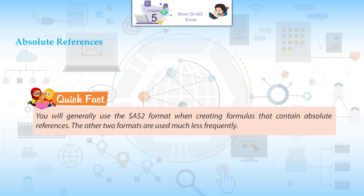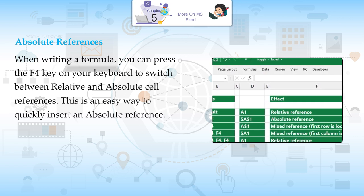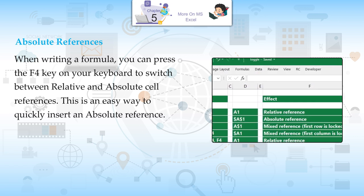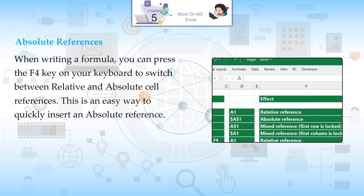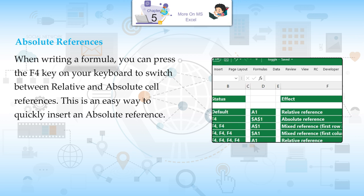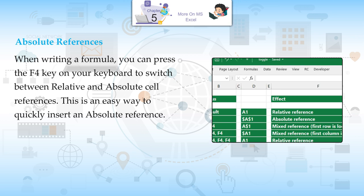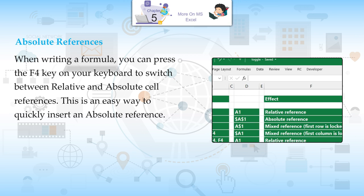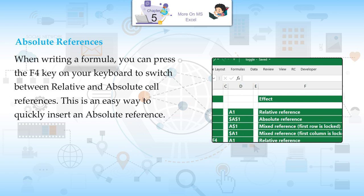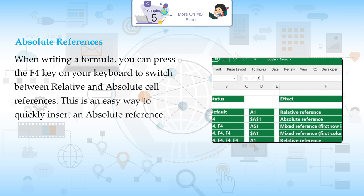The other two formats are used much less frequently. When writing a formula, you can press the F4 key on your keyboard to switch between relative and absolute cell references. This is an easy way to quickly insert an absolute reference.